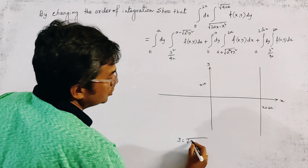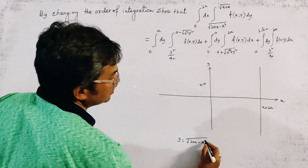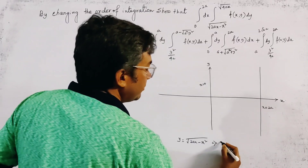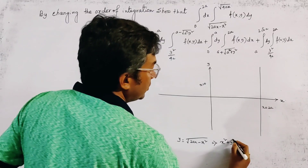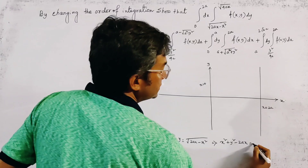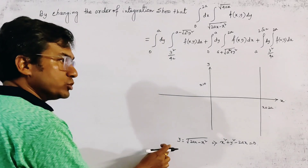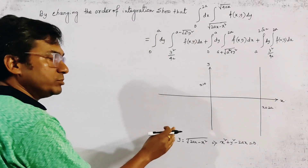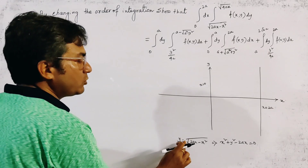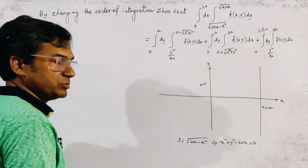The lower range y = √(2ax - x²) is given by x² + y² - 2ax = 0. We must take only the positive side of this circle, since it is given as positive only — not plus-minus, only positive.